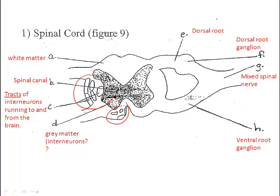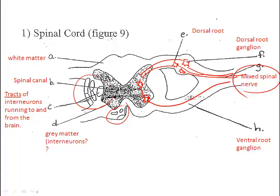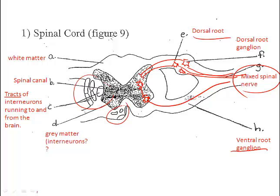There are two roots which unite to form mixed nerves, and there is a spinal ganglion, which is where groups of sensory neurons associate. Here we see a couple of sensory neurons. Here's an interneuron found exclusively in the grey matter, and here would be the cell body of a motor neuron. The dorsal root carries only sensory neurons, the ventral root carries motor neurons, and the only place that you would find interneurons is in the grey matter of the spinal cord.